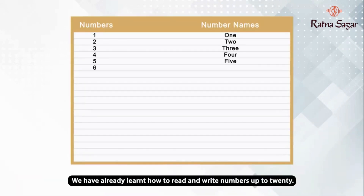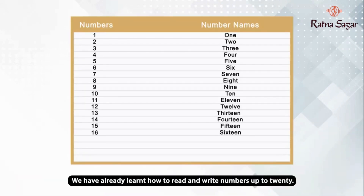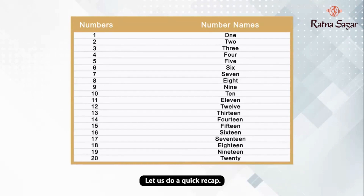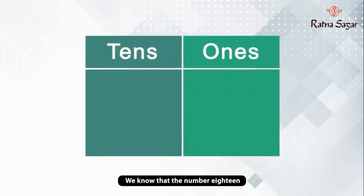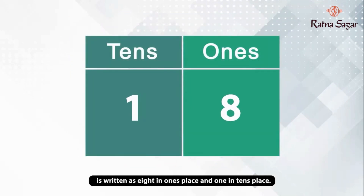We have already learnt how to read and write numbers up to 20. Let us do a quick recap. These are the numbers from 1 to 20 and their number names. We know that the number 18 is written as 8 in the 1's place and 1 in the 10's place.